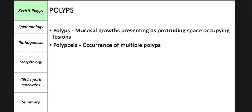Let's start with revisiting polyps. These polyps are basically mucosal growths which present as protruding space-occupying lesions. They are most common in the colorectal region but may also occur in the esophagus, stomach, or small intestine. Most if not all polyps begin as small elevations of the mucosa.